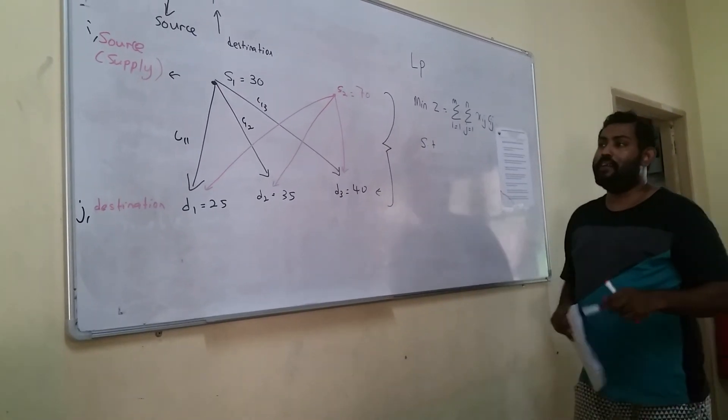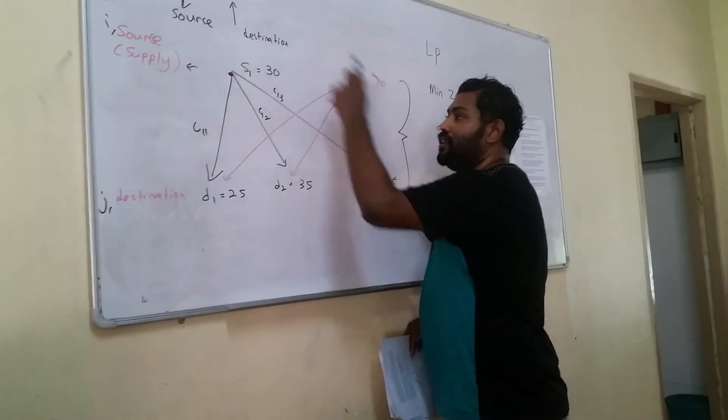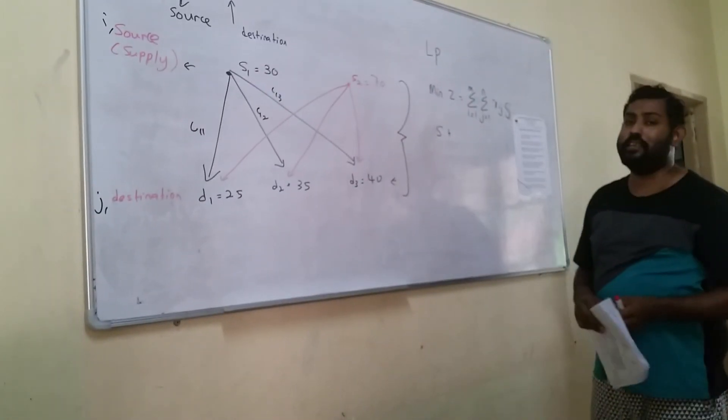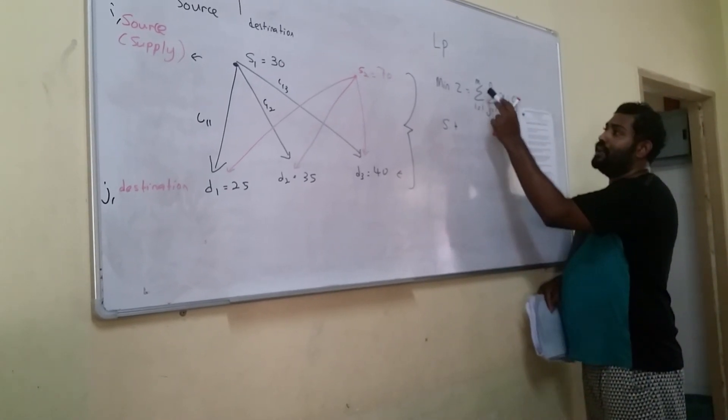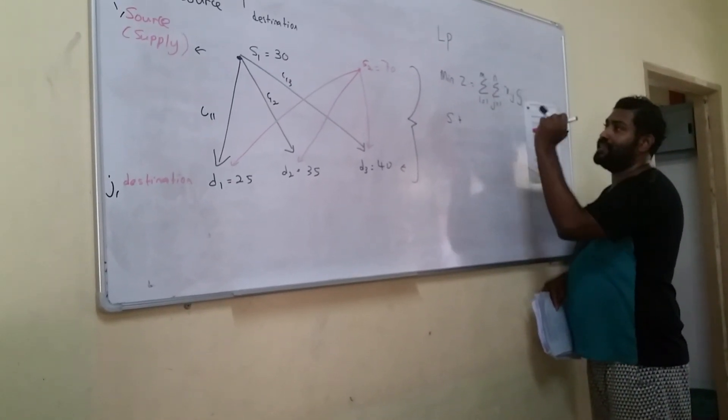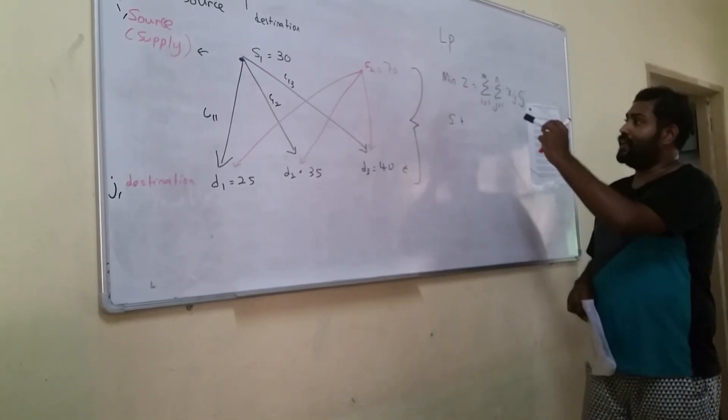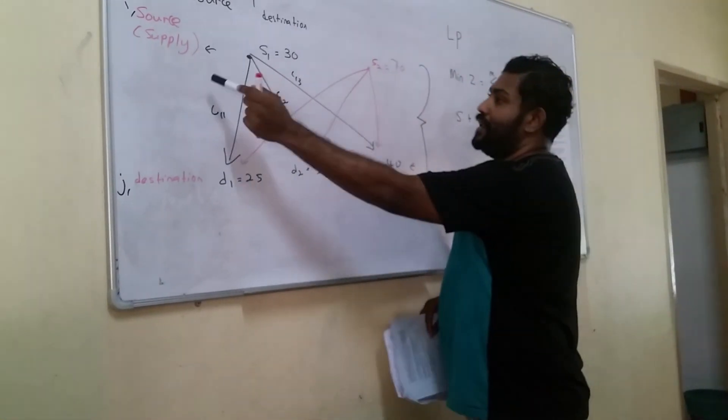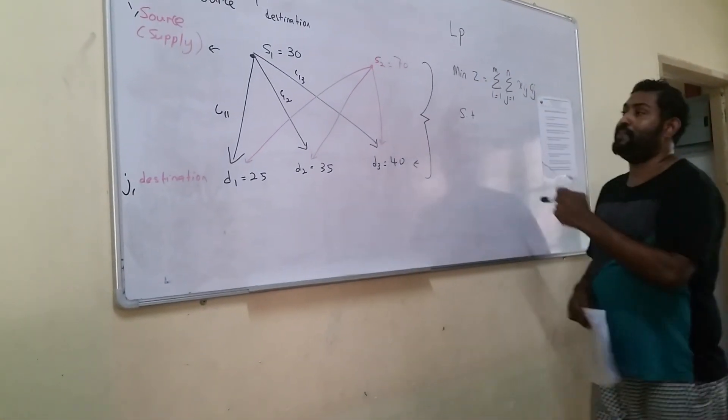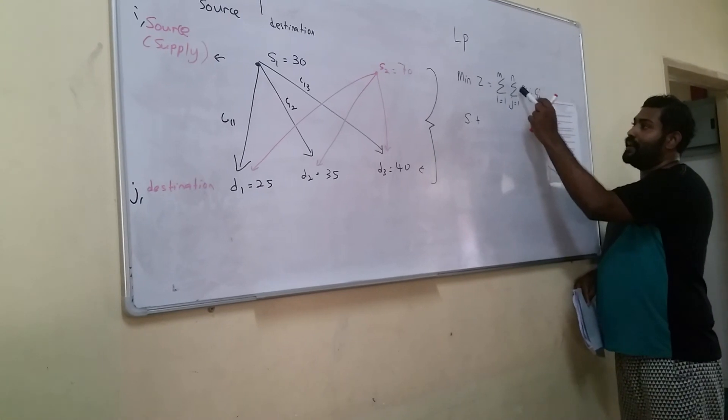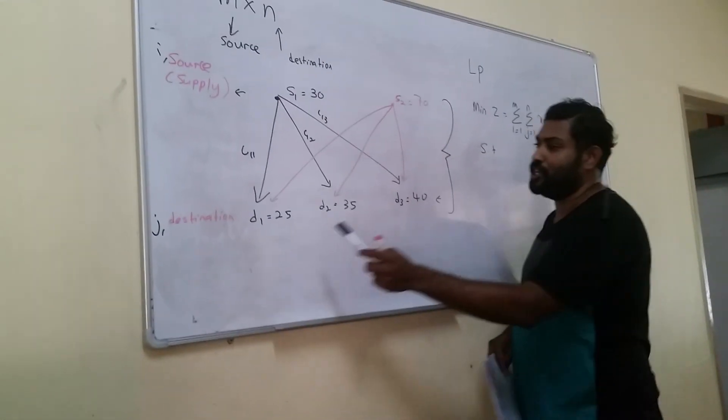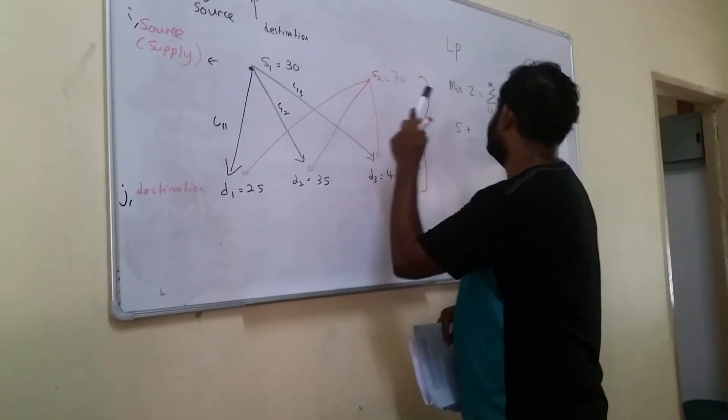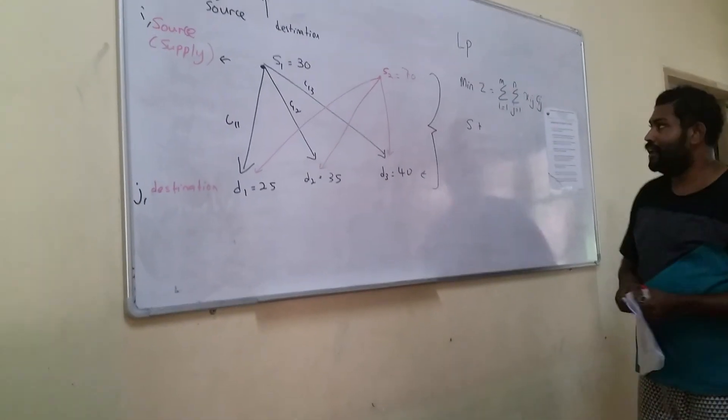Let's continue back. From this example of the model, we can convert this into a linear programming model, where our minimum is the summation of i equals to 1 until m, it means the summation of first supplier until m suppliers. And next is summation of j equals to 1, the destination, how many destinations, until n times of destination.